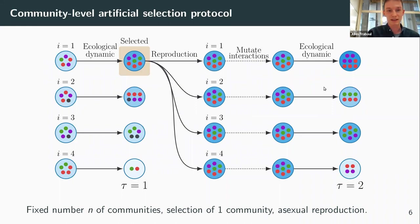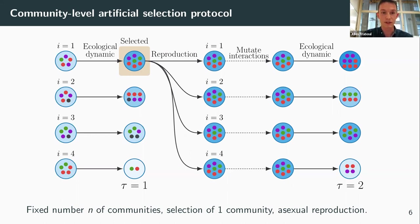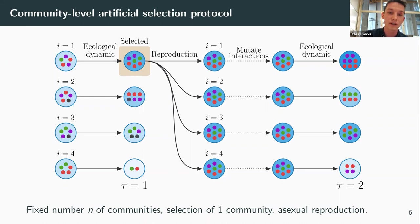Our model is the following, as sketched here. The big blue circles are the communities. We have a fixed number of communities called small n — here small n equals four. The individuals are represented by tokens, and the color of the tokens represents the different species. We start with different communities which, because they are different, have a different ecological equilibrium. We wait for these communities to reach their equilibrium, and then we select the one that has the higher total abundance — that is to say, the highest number of individuals.